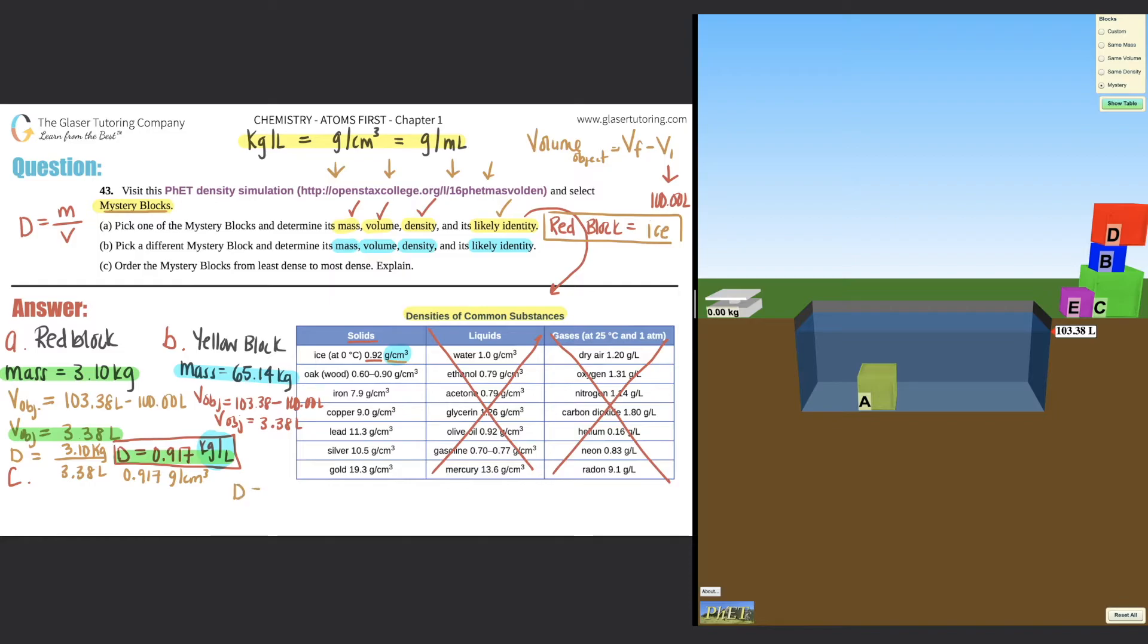So let's now find the density. Go back to that formula. D equals M over V. So the mass is 65.14 kilograms divided by 3.38 liters. So density equals 65.14 divided by 3.38. You get 19.3. So 19.3 kilogram per liter. But remember, it's the same unit as grams per centimeter cubed. So it's technically 19.3 grams per centimeter cubed. And that's the answer to the second part.